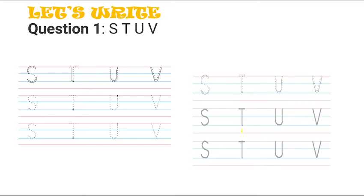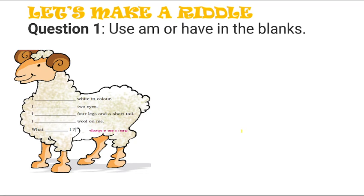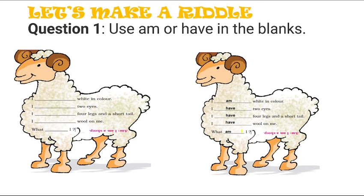Let's write STUV. Now let's solve a riddle using 'am' and 'have'. Fill in the blanks: 'I dash white in color' — answer: am. 'I dash two eyes' — answer: am. 'I dash four legs and a short tail' — answer: have. 'I dash wool on me' — answer: have. What am I? The answer is: I am a sheep.